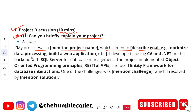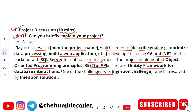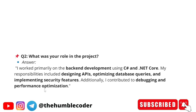A possible answer can be: 'My project was [project name], which aimed to [goal]. I developed it using C# and .NET on the back end, with SQL Server for database management. The project implemented object-oriented programming principles, RESTful APIs, and used Entity Framework for database interactions. One of the challenges was [your challenge], and I resolved it by [your solution].' This is how you answer the project explanation question.